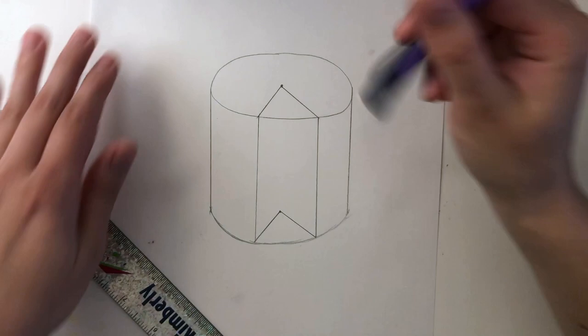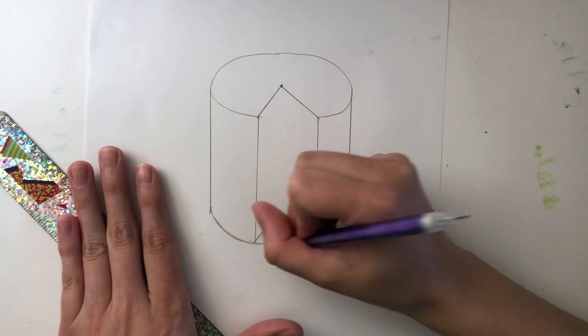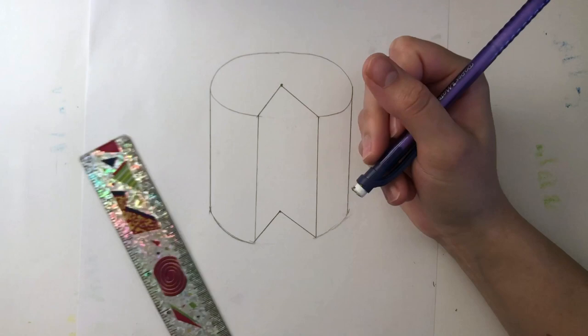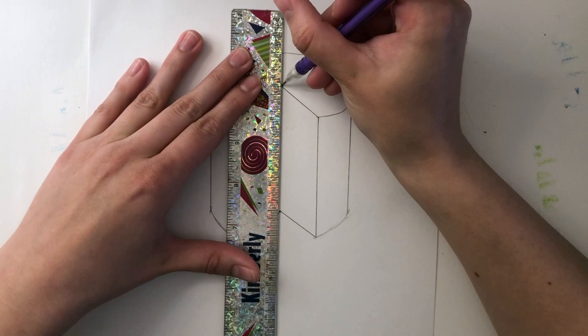Now you can erase the top and bottom edge that have been cut away. We'll need to create one more line to finish off our three-dimensional slice. Now using your ruler connect the two points together in the center.